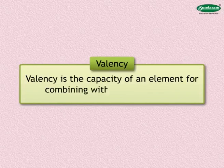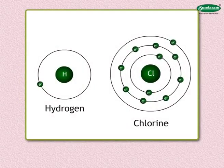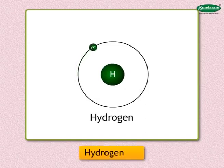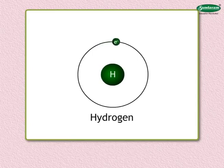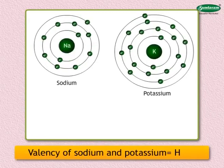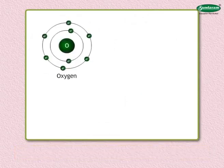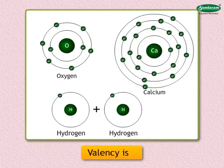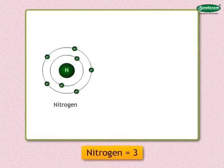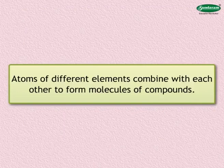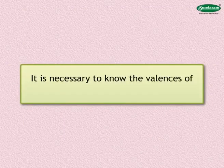Now moving on to valency — valency is the capacity of an element for combining with other elements. Every element has a definite combining capacity. The valency of any element is compared with that of hydrogen, which is considered to be one. The valency of an element is always a whole number. The valency of sodium and potassium is equal to that of hydrogen, that is one. Oxygen and calcium have a combining capacity twice that of hydrogen, so their valency is two. The valency of nitrogen is three and that of silicon is four.